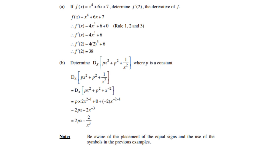For the next example, f(x) equals x to the power of 4 plus 6x plus 7, and you must find f'(2). You must first differentiate: x to the power of 4 becomes 4x cubed, 6x becomes 6, and 7 becomes 0. Then substitute 2 into x and you get the answer 38. For the next one, px squared plus p squared plus 1 over x squared — you first need to change 1 over x squared to x to the power of negative 2. Do your differentiation first, and then substitute x with 2. Beware of the placement of the equal sign and the use of symbols.